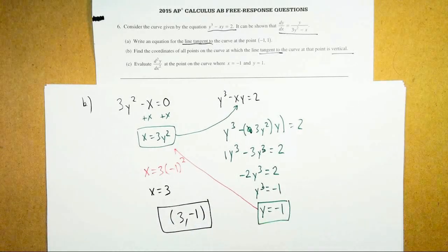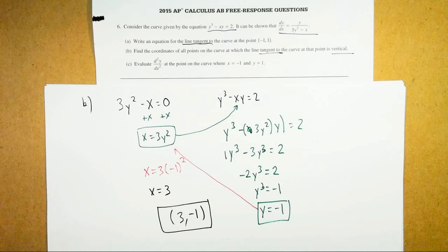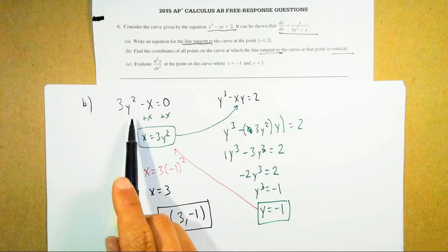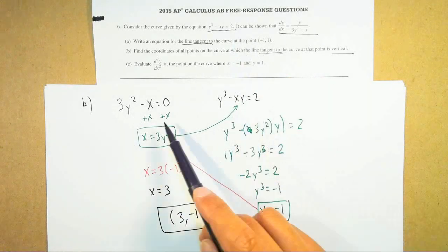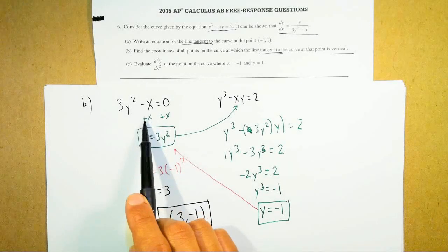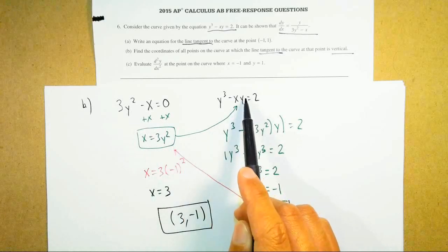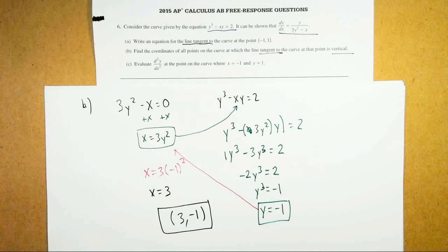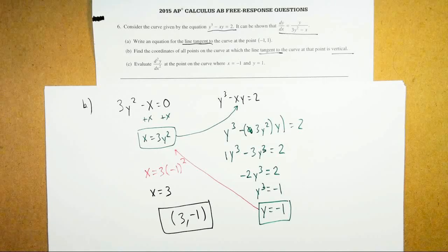This part is worth three points — this is one of the most difficult questions on the free response. So the key takeaway: for Part B, vertical tangent lines are found by setting the denominator of your derivative equal to zero. Then use the original curve equation as a system to substitute and solve. Horizontal tangent lines are found by setting the numerator of your derivative equal to zero — you really might be asked that. As of now, we've received five out of nine points for parts A and B.